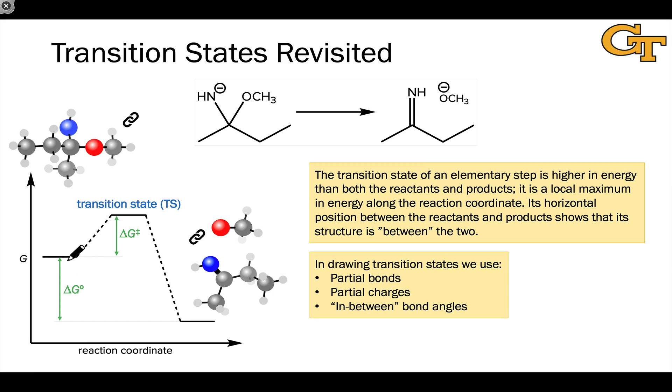We've defined an elementary step as a process that involves one set of reactants in an energy valley, one set of products in a second energy valley, and a transition state—a single transition state separating the reactants and products. The transition state is a maximum on the reaction coordinate.